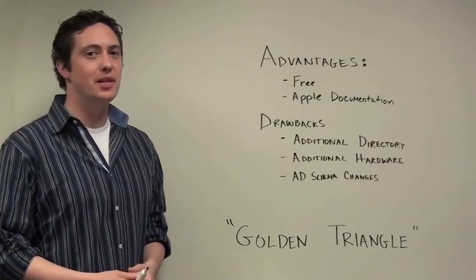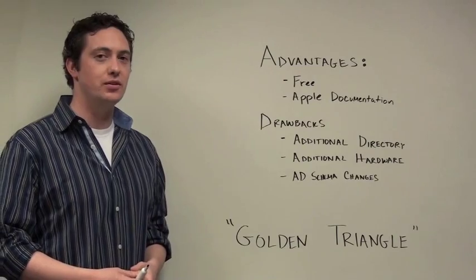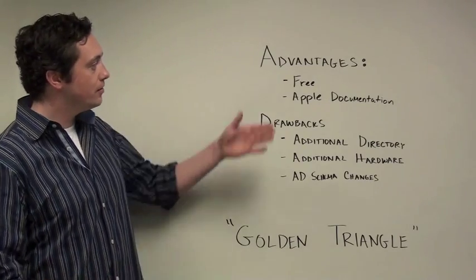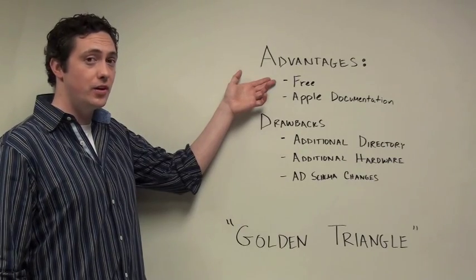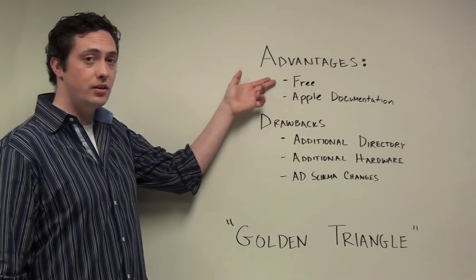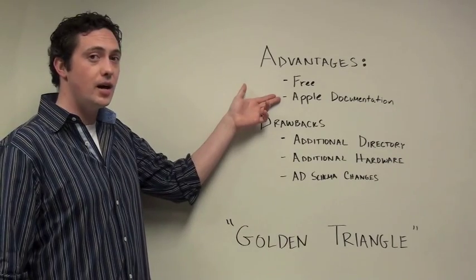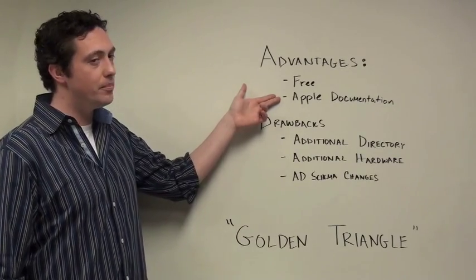So let's look at some of the advantages and disadvantages of the Golden Triangle solution. First off, it's free. Open Directory is free. And if you've already invested in Active Directory, it could be a cheap solution for you. There's also a lot of Apple documentation available out on the web.